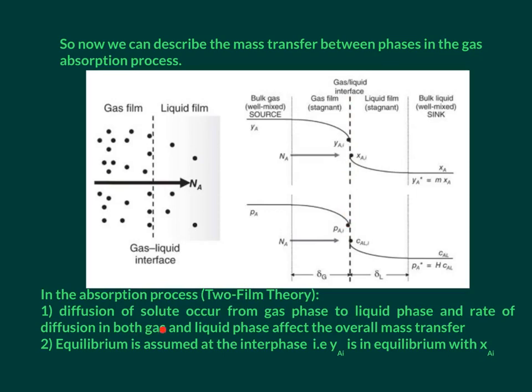diffusion of solute occurs from gas phase to liquid phase, and the rate of diffusion in both phases affects the overall transfer. According to two-film theory, equilibrium is assumed at the interface, that is, between YAI and XAI.